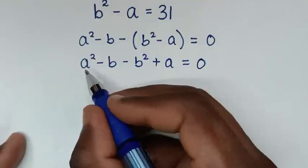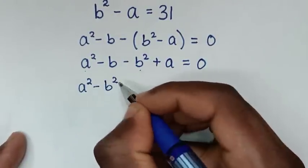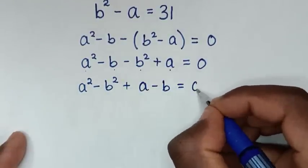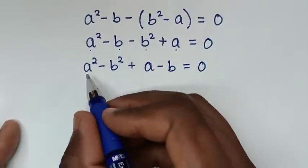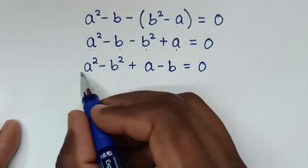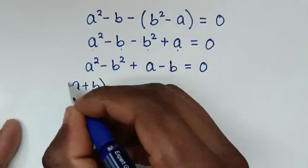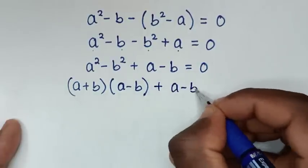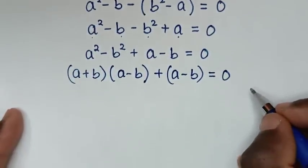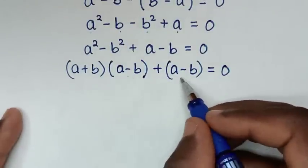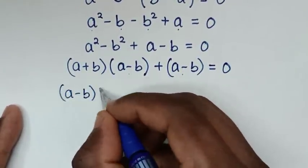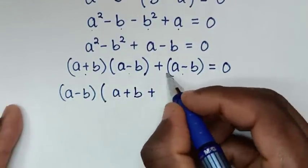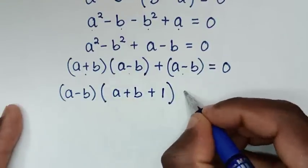In the next step, we group a squared minus b squared, plus a minus b equals 0. Now a squared minus b squared is a difference of squares, which equals bracket a plus b bracket times bracket a minus b bracket. So we have bracket a plus b bracket times bracket a minus b bracket, plus bracket a minus b bracket equals 0.